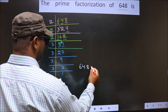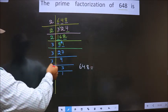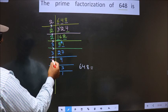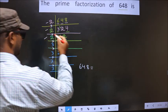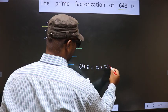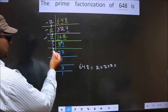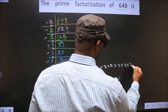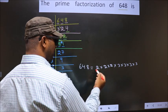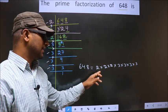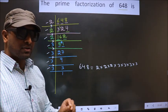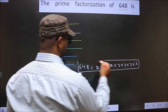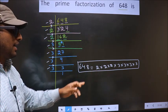So the prime factorization of 648 is the product of these numbers. That is, how many times do we have 2? Three times. So 2 times 2 times 2. And how many times do we have 3? Four times. So 3 times 3 times 3 times 3. This is the prime factorization of 648, also called the product of prime numbers of 648. So this is our answer.